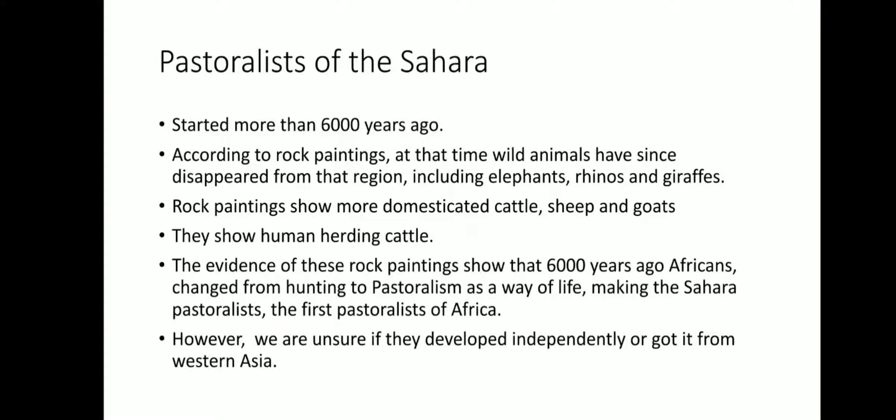At that time, wild animals had since disappeared from the region, including elephants, rhinos, and giraffes, due to temperatures rising and getting warmer every day. The rock paintings show more domesticated animals such as cattle, sheep, and goats. They also show humans herding cattle. The evidence of these rock paintings shows that 6,000 years ago, Africans changed from hunting to pastoralism as a way of life.